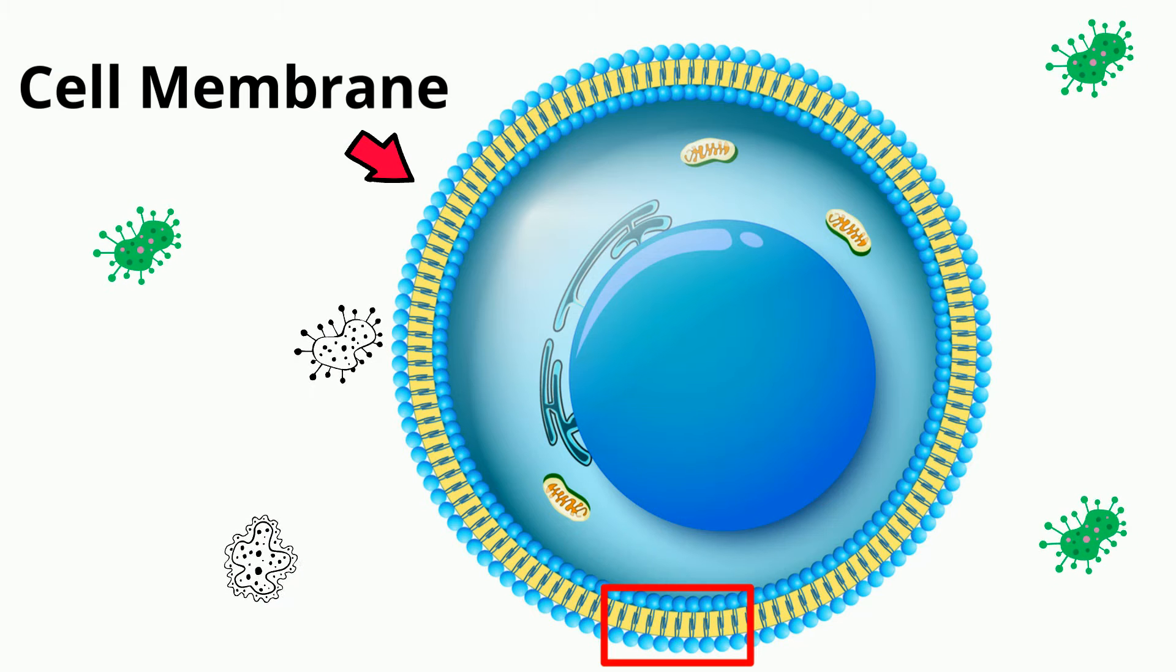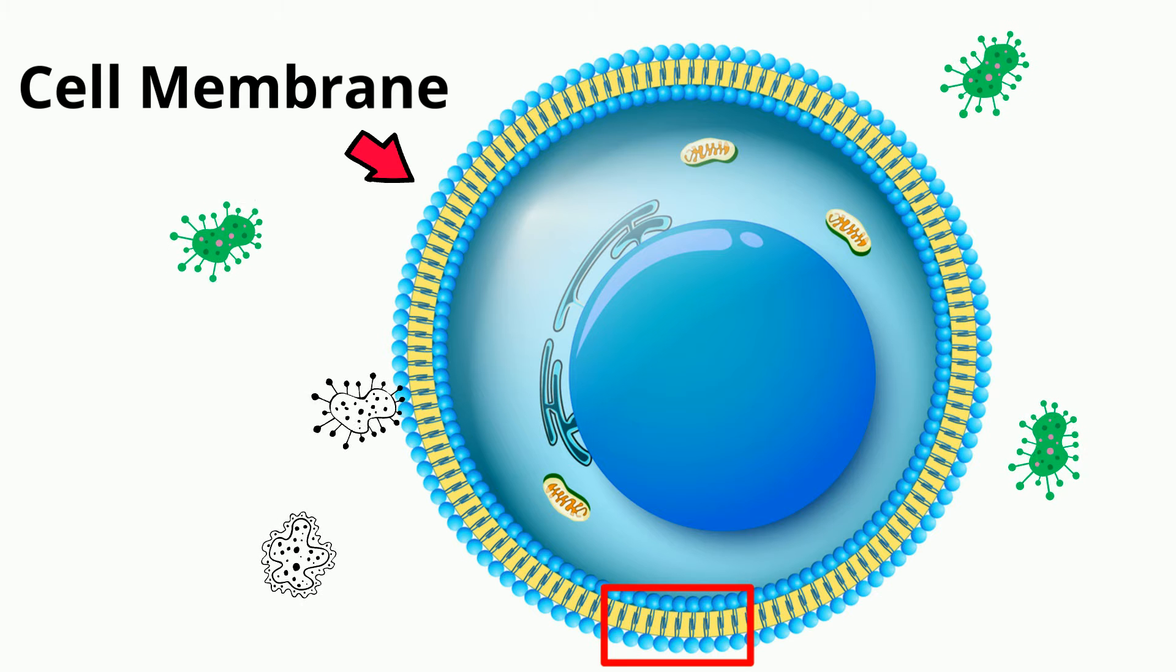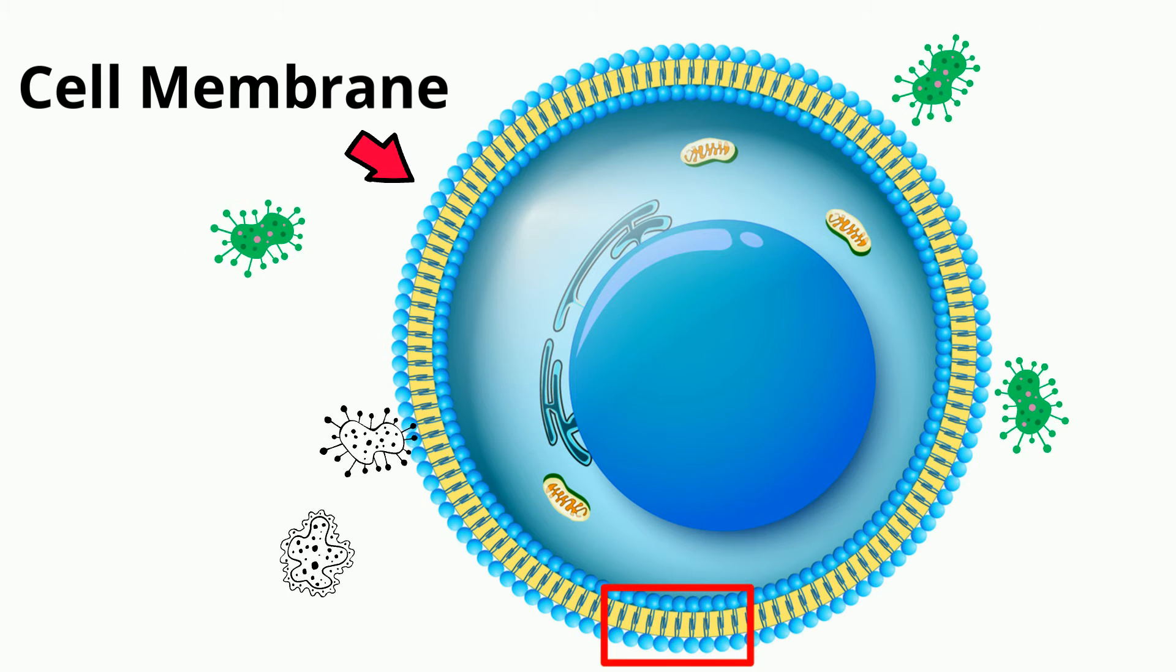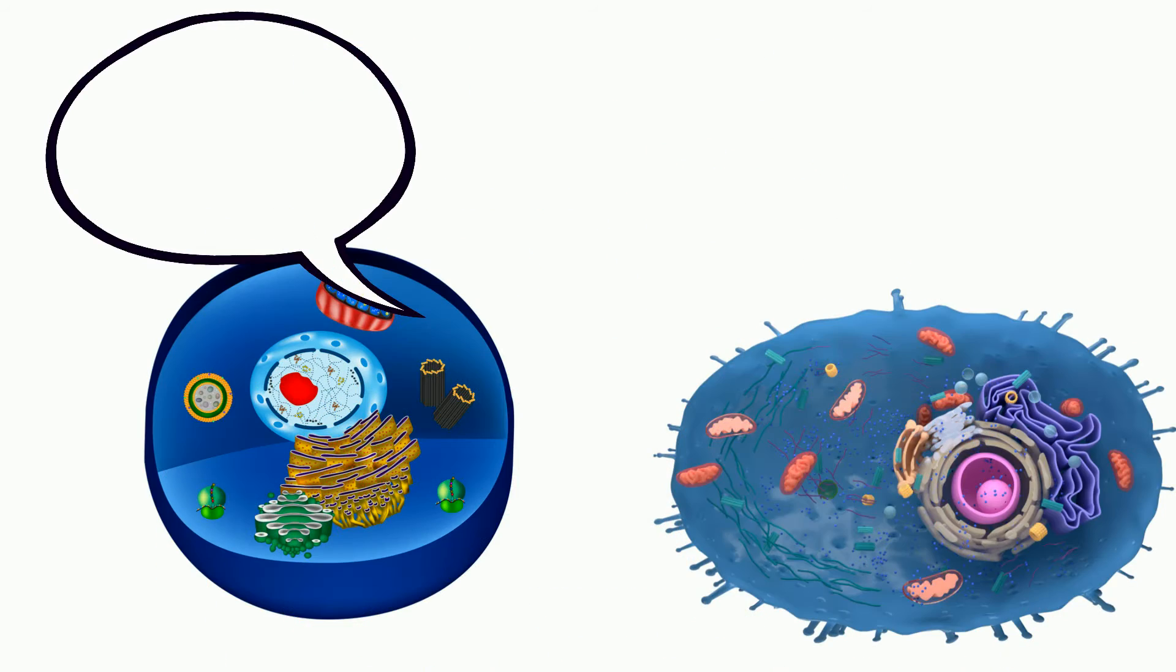This layer protects the cell from all the things that want to infect the cell. In addition, the membrane also has other molecules like carbohydrates, proteins, and cholesterol, and they help keep the cell flexible along with communication among other cells.